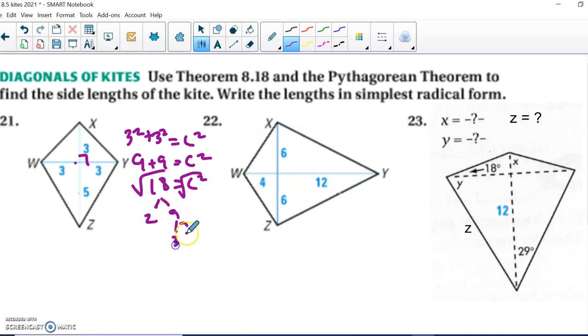18 equals c squared or the square root of 18. If we break that down, that's 2 times 9, 3 times 3. Bring our pair outside. The leftover stays inside. So you can see the length of our kite is going to be 3 root 2.